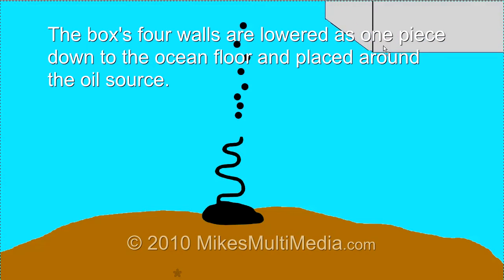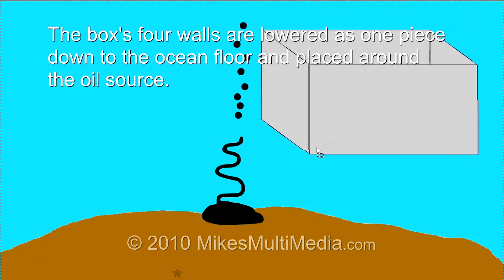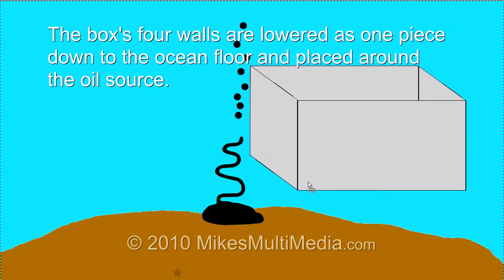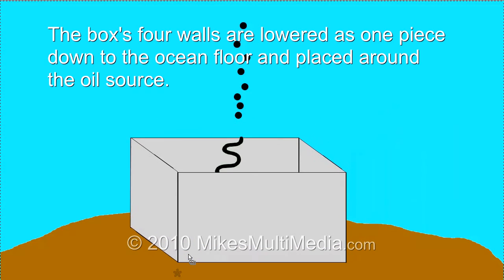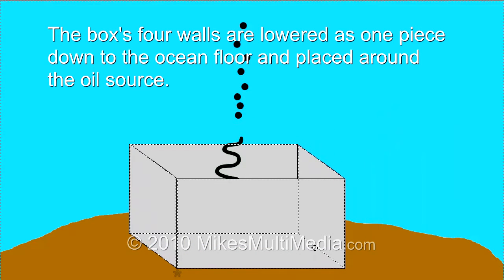The box's four walls are lowered as one piece down to the ocean floor and placed around the oil source. Since the box is lowered without the top, water is able to flow through it as it is lowered down to the ocean floor with little or no resistance.